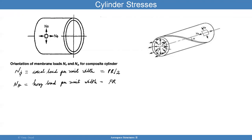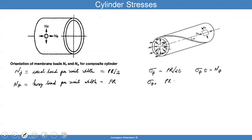In effect, the axial stress is PR over 2T, where T is the thickness of the wall. So n_phi equals stress times T in this example. Similarly, sigma_theta equals PR divided by T, and sigma_theta times T equals n_theta. You may have seen this formulation before, but I'm writing it a different way so you can look at it more carefully.